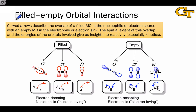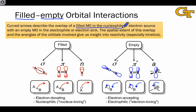More specifically, what we're referring to is the overlap of a filled molecular orbital with an empty molecular orbital. The numbers and types of these orbitals are limited as long as we take a localized approach. The filled MO contains a pair of electrons and is thus associated with the nucleophile — the electron donor — while the empty MO, which lacks electrons, must be associated with the electrophile, or the electron sink, or acceptor.